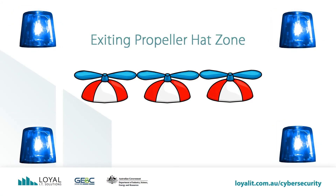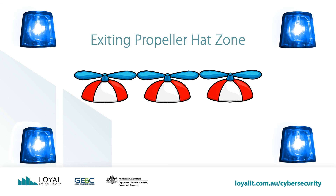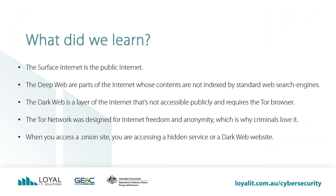That's the dark web and the Tor network. It all boils down to using the Tor browser and accessing .onion websites to access the dark web. What did we learn? The surface web is readily available to the general public and searchable with standard web search engines. The deep web's contents are not indexed by standard web search engines. The dark web is a layer of the internet that's not accessible publicly — it's anonymous and requires specific software configurations and authorizations to access, in other words, the Tor browser. The Tor network was designed for internet freedom and anonymity, which is why criminals love it. When you access a .onion site, you are accessing a hidden service or a dark web website.